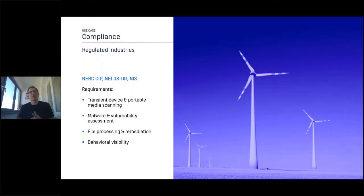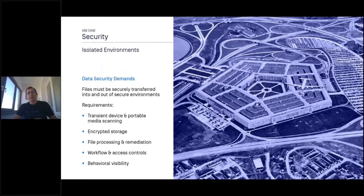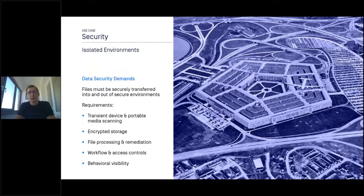There's obviously a need to make sure data transferred over the air gap is clean. In isolated environments it becomes a bit challenging where we cannot use a diode — it's essentially jumping over the air gap using encrypted portable storage devices. The file processing and remediation is more challenging but still doable. There's obviously a need to implement robust workflows and enough access controls so the security team can be confident knowing the data moving from IT to OT is safe.